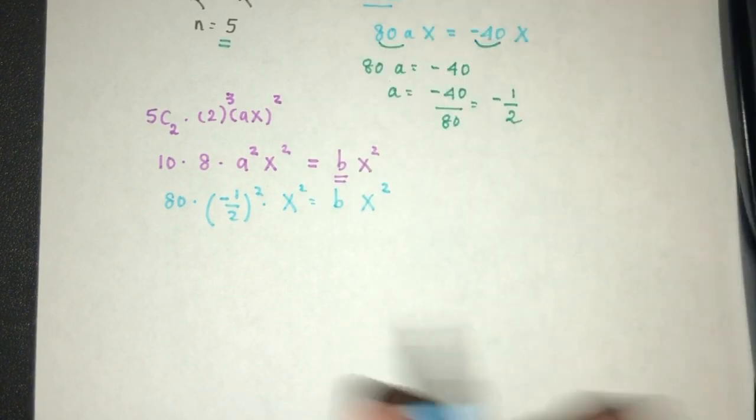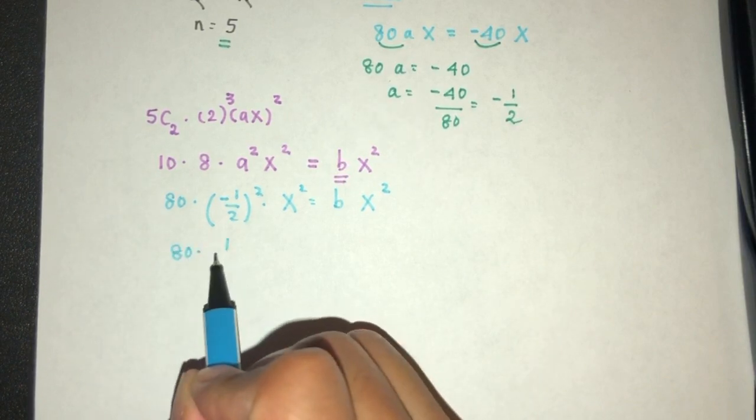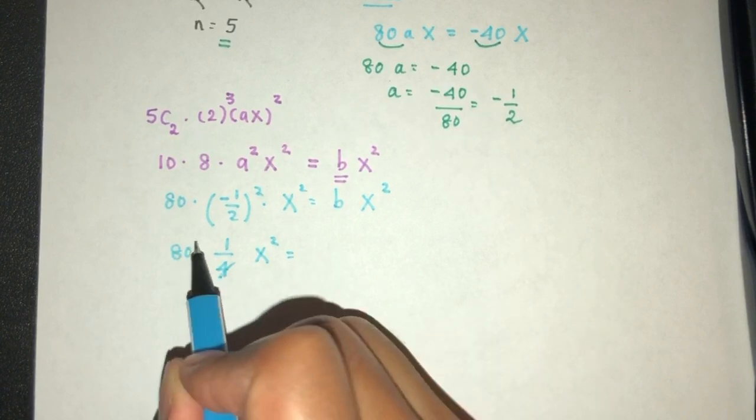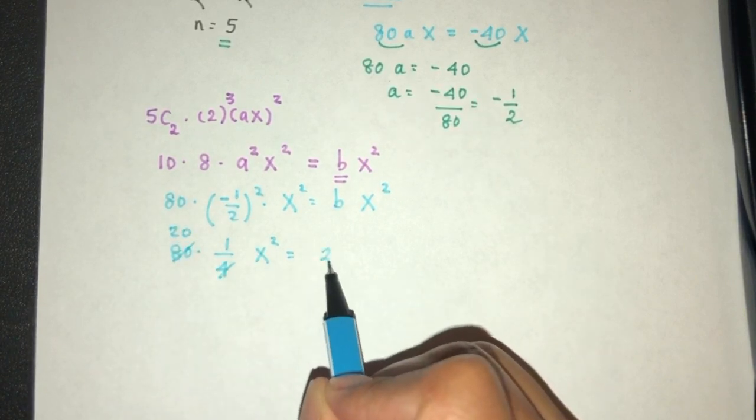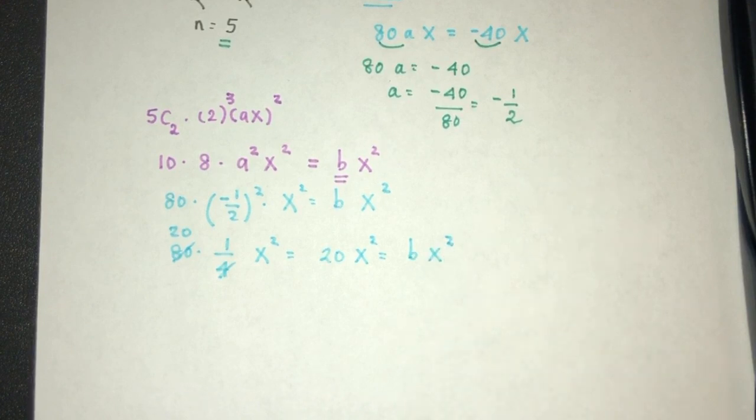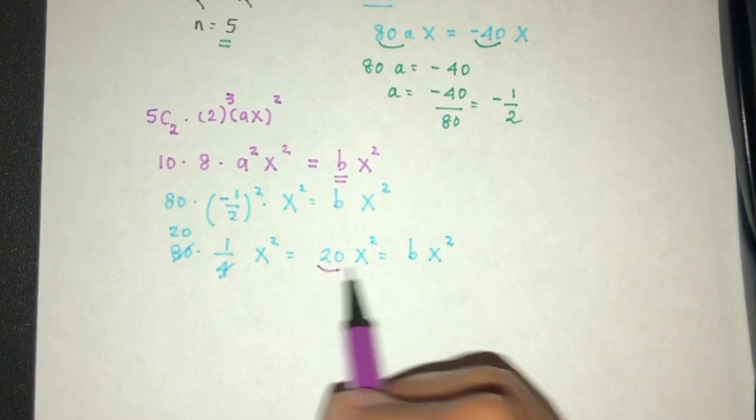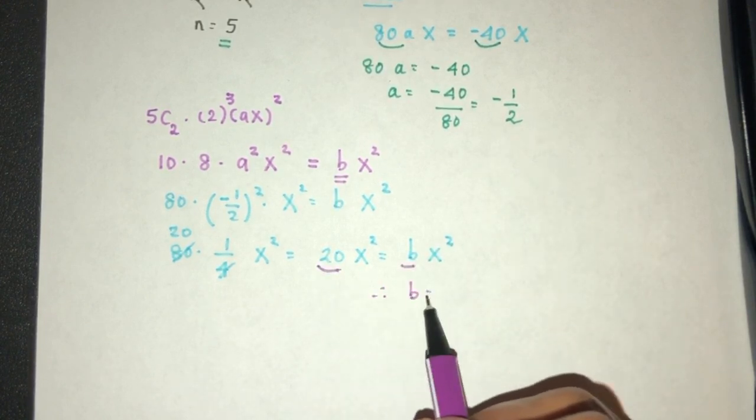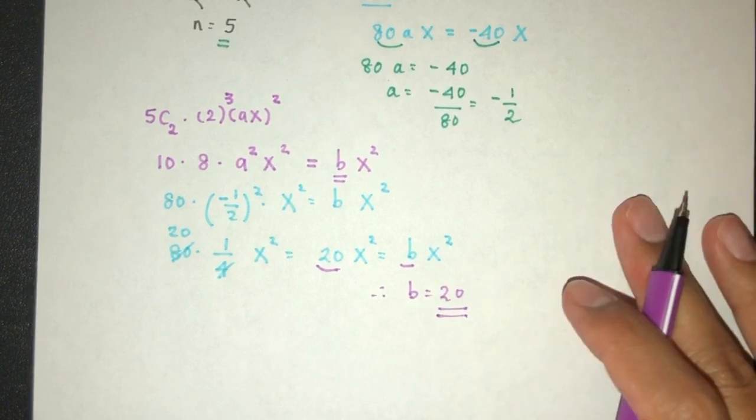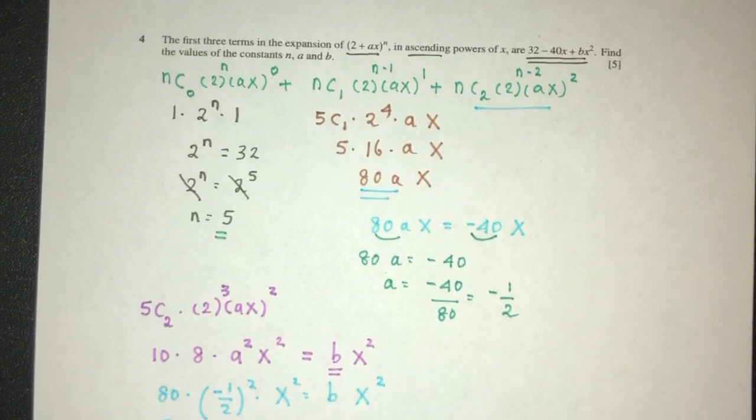Now, minus half square is what? It is 1 over 4, and that will be this. We can simplify, it will become 20. So 20x square is supposed to be bx square. So, obviously, by comparing the coefficients, we can see b have to be the value of 20. And that is your question in relation to binomial expansion.